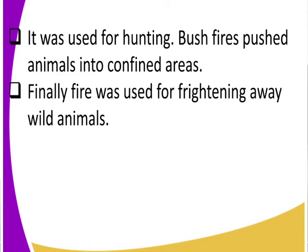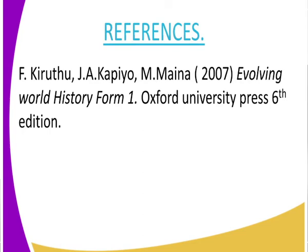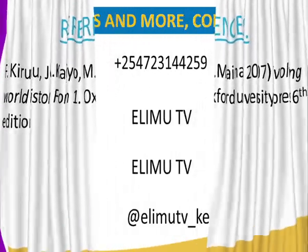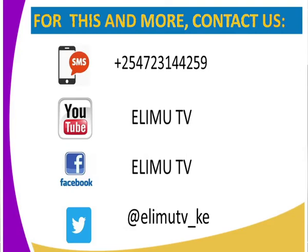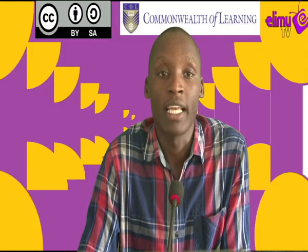Now class, for our assignment — as always after class we have an assignment. Can you state the tools used during the Middle Stone Age, their types, and their uses? For reference, let us use Evolving World History, Form 1, Oxford University Press, the sixth edition. As always, this is your favorite channel where you get to watch and learn — Elimu TV. Always contact us via our SMS line, YouTube, Facebook, and Twitter. Let us watch Elimu TV for more lessons and let us learn.